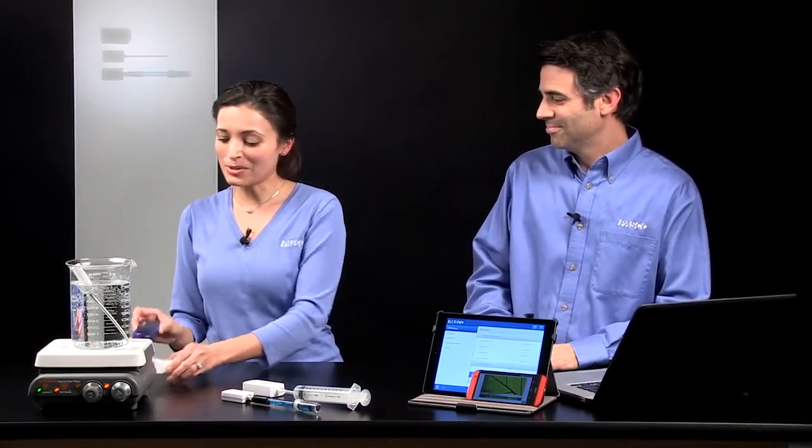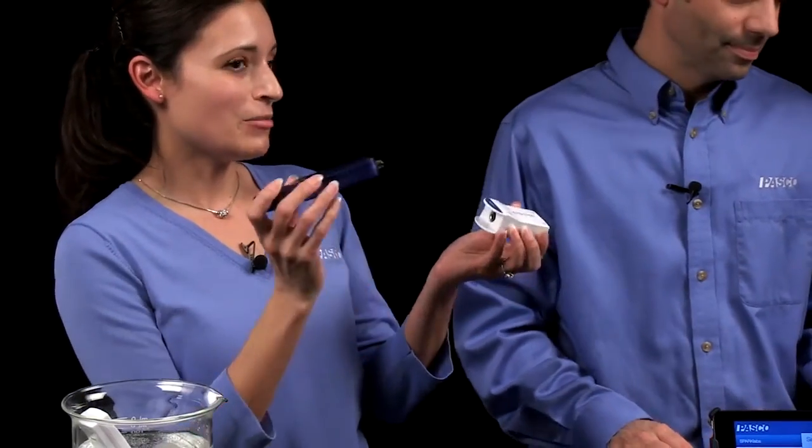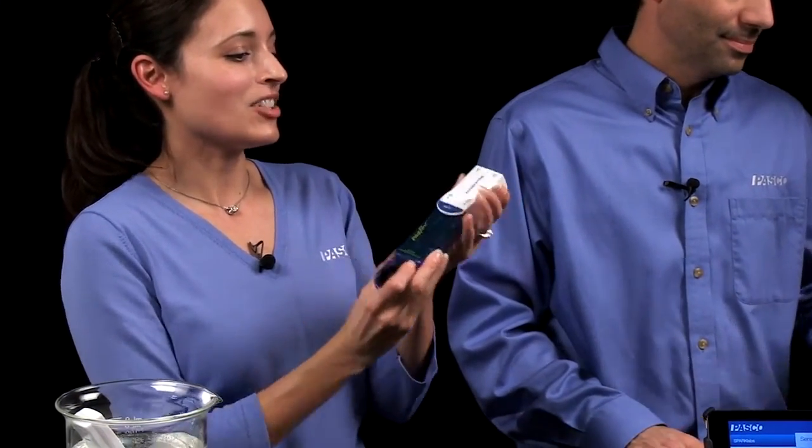So this is a great start to our wireless sensor line. But there are going to be other sensors to come that are going to address the needs that you have in your physics, in your chemistry, in your biology, and in your environmental classes. And for your sensors that you already have, you can connect an existing passport sensor to an Air Link and make it a wireless connection.